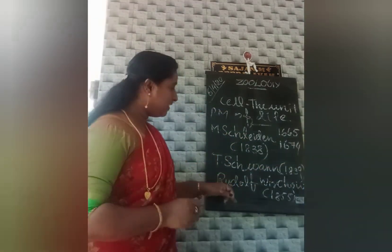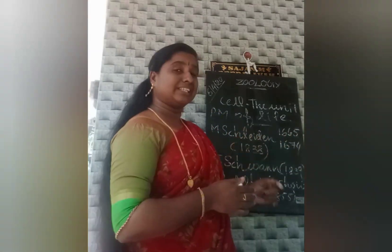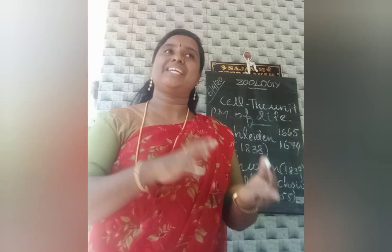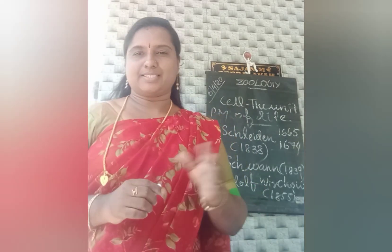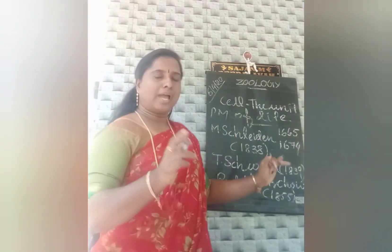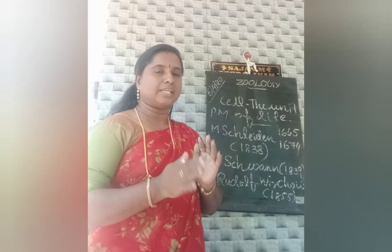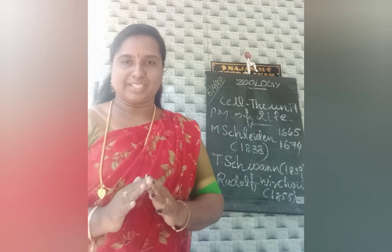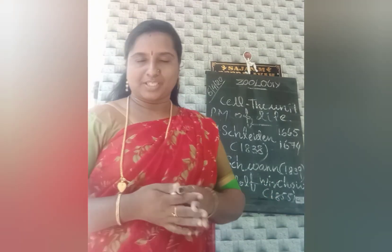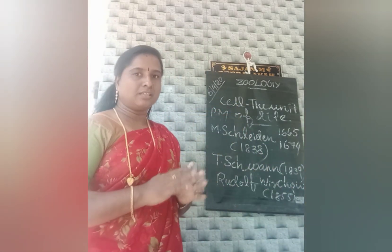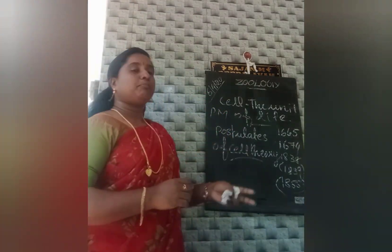Later, in 1855, another scientist — Rudolf Virchow — added another point to cell theory: a new cell is formed from a pre-existing cell, expressed in Latin as 'omnis cellula e cellula.' Schleiden and Schwann had formulated cell theory but could not explain how new cells are formed, so Rudolf Virchow added this important postulate.